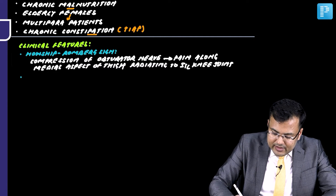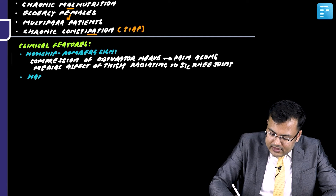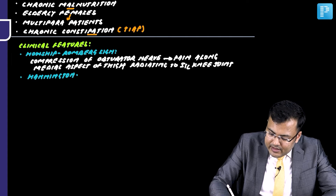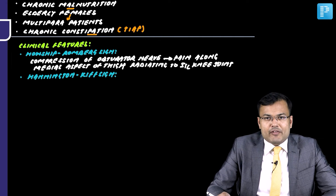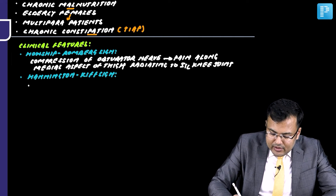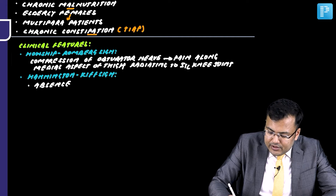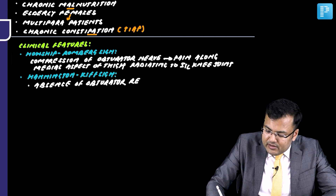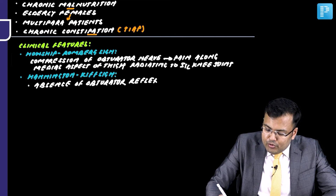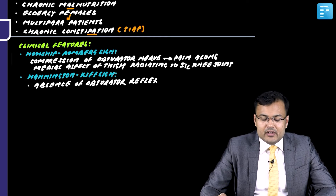The second sign is Hannington-Kiff sign, in which there is absence of obturator reflex. The obturator reflex is the withdrawal reflex.